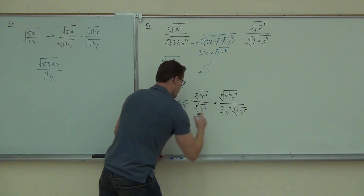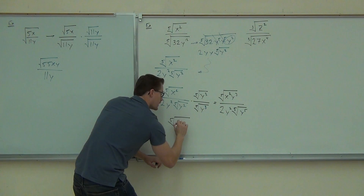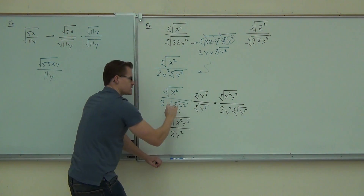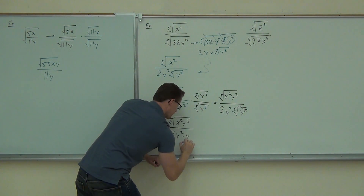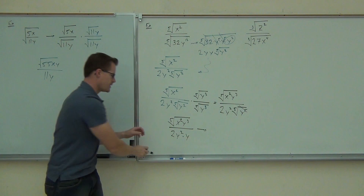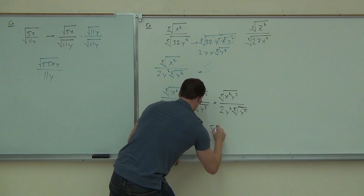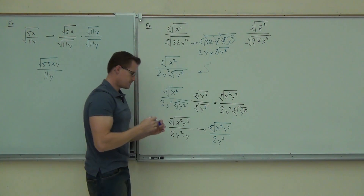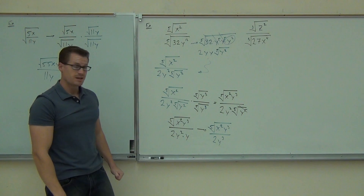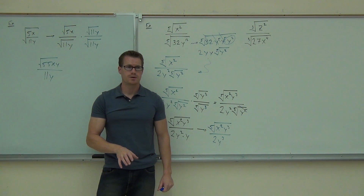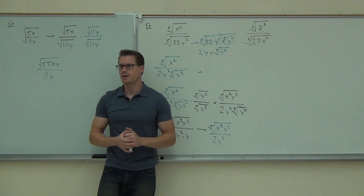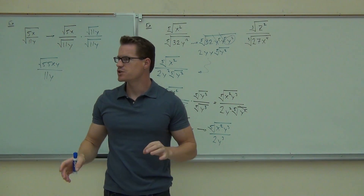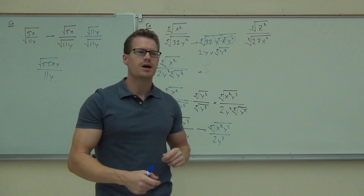The last thing we do is make sure we have the same exact power and root, then simplify. This piece gives us a y. So let's see what we have: 5th root of x squared y cubed, we still have 2y squared, and this gives us a y — so we can write that as the 5th root of x squared y cubed over 2y cubed. Did we successfully get rid of the 5th root on the denominator? Absolutely. Now simplify the roots first, then rationalize what you need to.